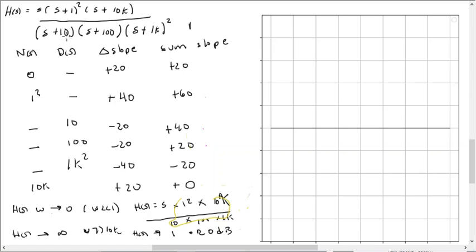These are the break frequencies, and the poles, of course, would be minus 10, minus 100, and 2 at minus 1k.